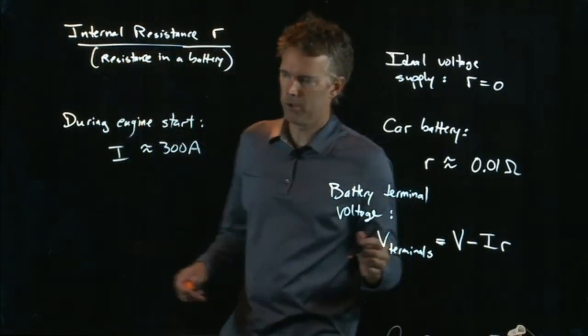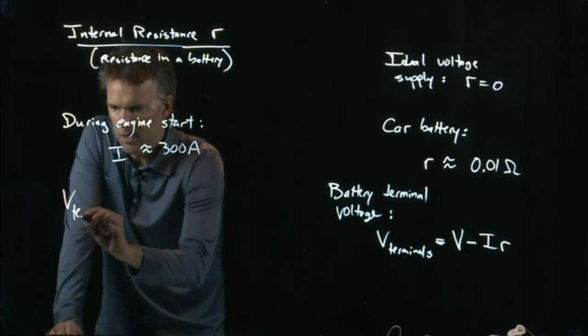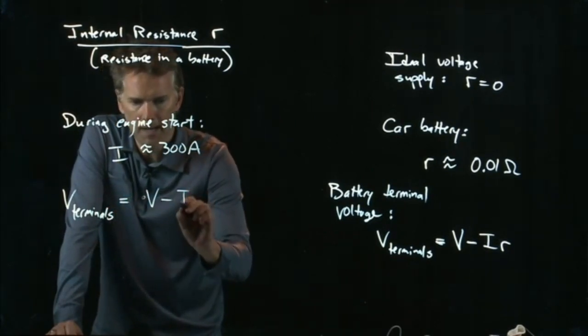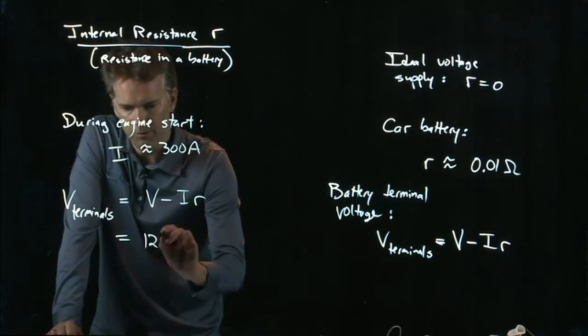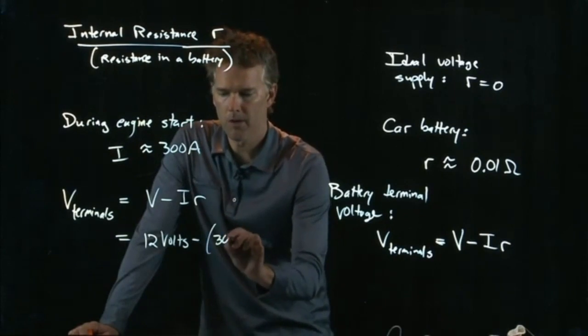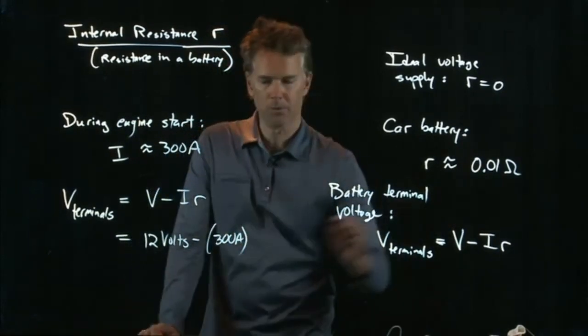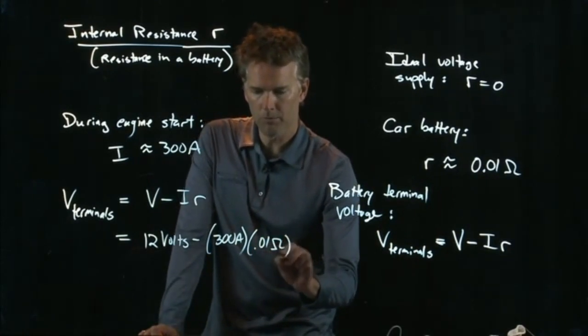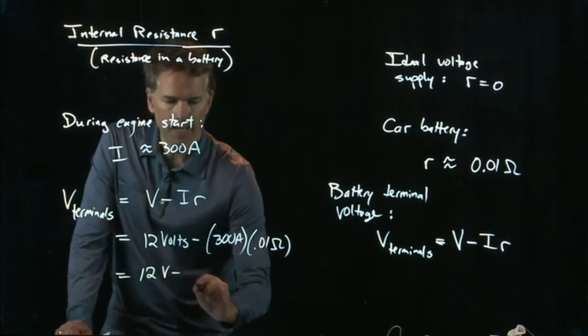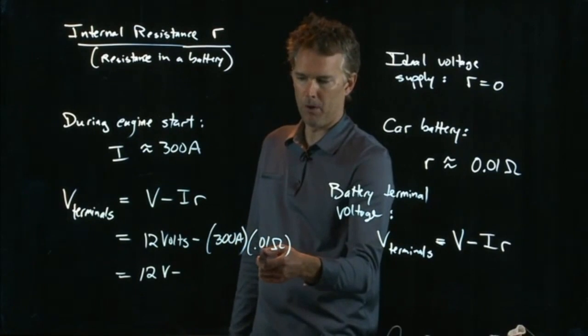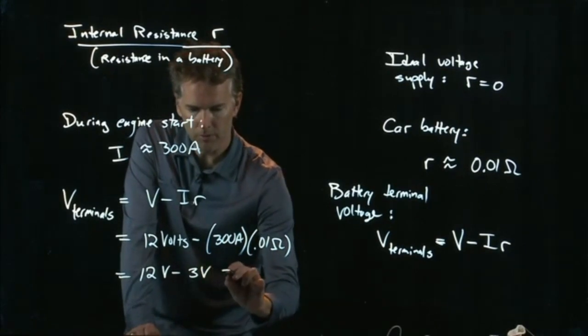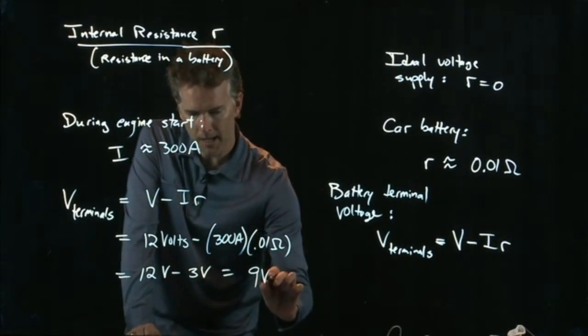So what is the voltage on those terminals? V on the terminals is going to be V minus IR, which is 12 volts minus I, 300 amps, times little r, 0.01, is 3, right? That's a hundredth. Amp times ohms is also volts. And so you get 9 volts.